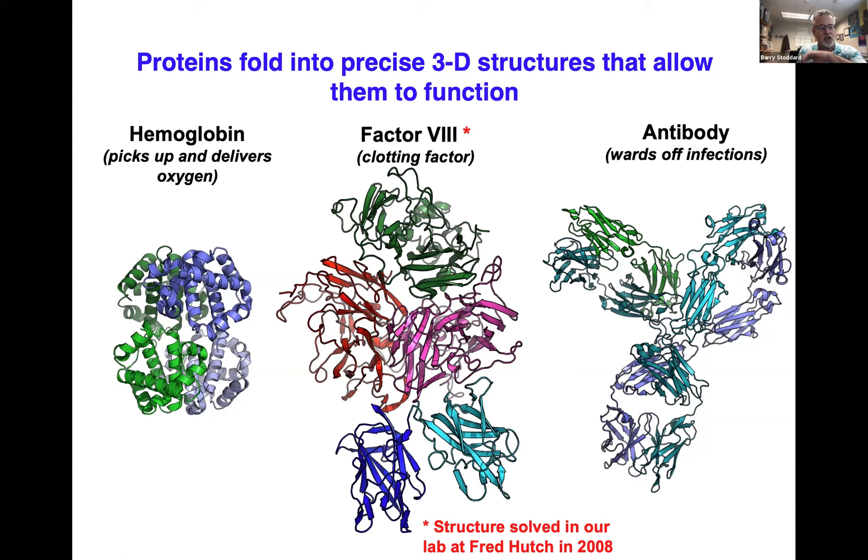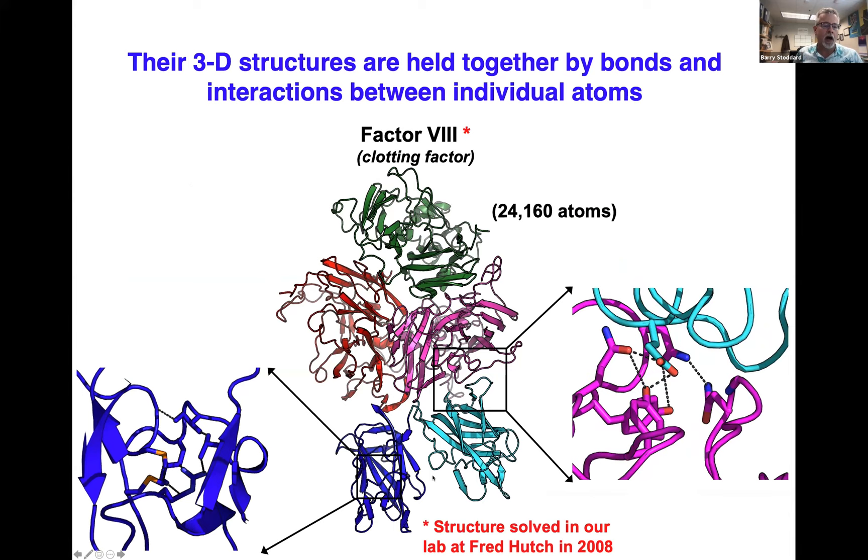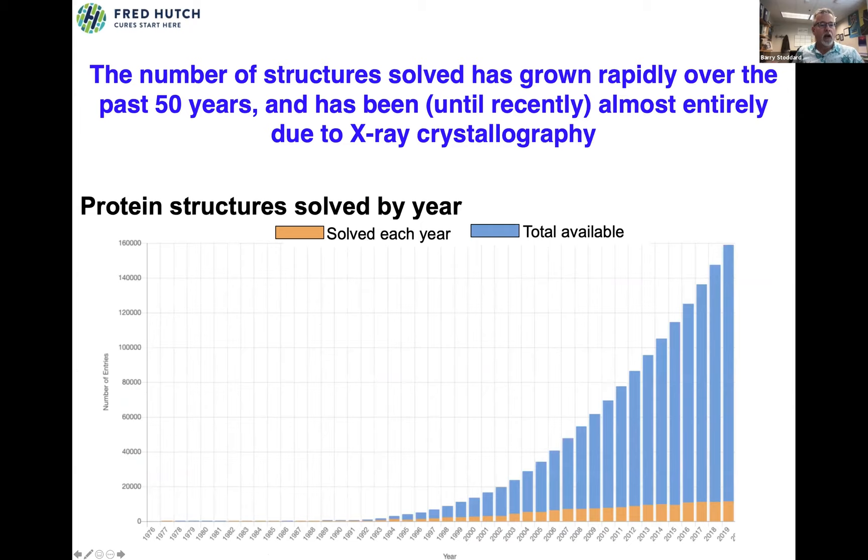These pretty diagrams are actually cartoon representations of much more complex underlying structures. These ribbons represent a chain of amino acids that fold up into various shapes. The underlying structures are comprised of bonded groups of atoms. The 3D structures are held together by bonds and interactions between individual atoms. To give you a sense of scale, this protein, factor VIII, is made up of exactly 24,160 atoms arranged into multiple protein chains that fold up into a precise three-dimensional architecture, allowing this protein to assist in blood coagulation.